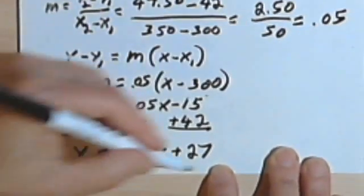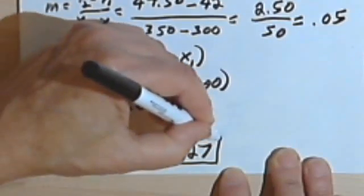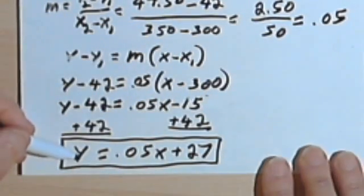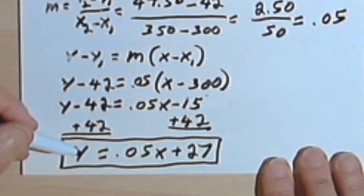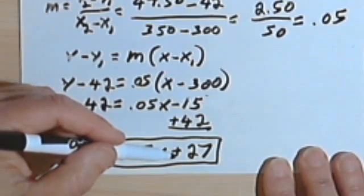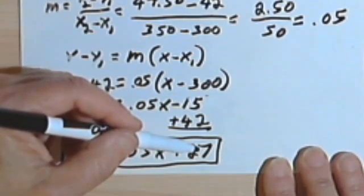So this would be my final equation. And interpreting this equation, I would know that the cost for using my cell phone is 5 cents for each minute I use it plus a basic fee of 27 dollars. Okay, so that's basically it.